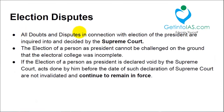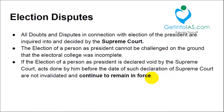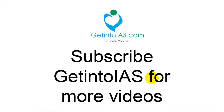Regarding election disputes, the Supreme Court is the major authority. The election cannot be challenged on the ground that the electoral college is incomplete due to vacancies. Also, if a president's election is declared void by the Supreme Court, acts done before that declaration continue to remain in force. I hope you now have a clear understanding of the process involved in the president's election and how Ramnath Govind cleared these stages to become the president of India. Thank you, subscribe and stay tuned for more videos.